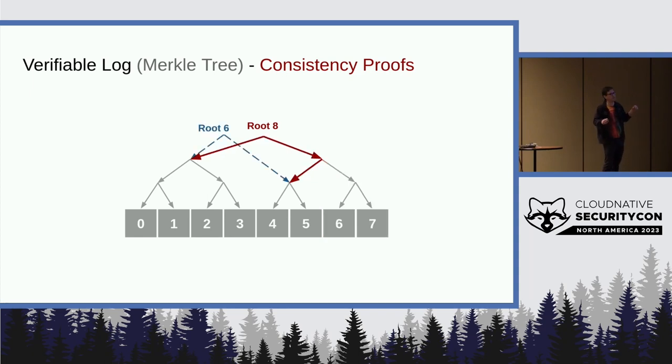And you do that essentially just by showing that all the stuff that used to be in the log is included. We don't need an inclusion proof for 0 through 5 individually. We just need inclusion proofs that show that their parent branches are and that you can recompute root 6 from them.